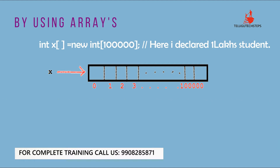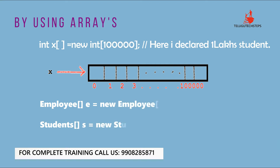Similarly for employees: Employee[] employee = new Employee[100000]; and for students: Student[] students = new Student[10000]; Arrays improve readability and allow us to represent a large number of values with one variable. But now what is the problem? This leads us to why we need collections.